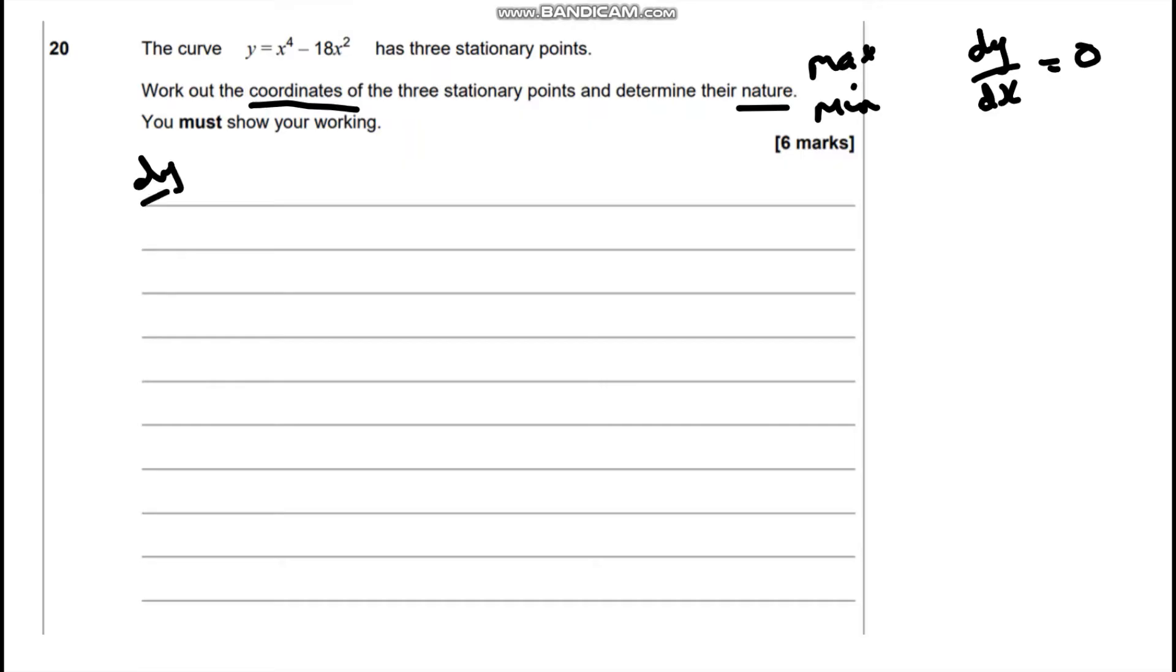So dy by dx, we're going to multiply by the power, take one away from the power so 4x to the 3, multiply by the power, 36, take away 1 from the power and it's x. And we want to know when this equals zero.